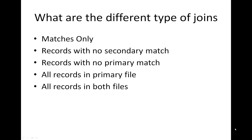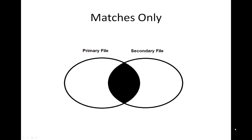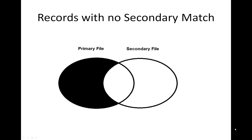I'll show you how the different matches fit together, and then we'll go to IDEA and do examples of each one. When performing a join in IDEA, we must have two files: the primary file and the secondary file. When we select the matches only option, we are selecting the intersection between the two — only records that exist in both the primary file and the secondary file. The records with no secondary match takes all transactions from the primary file that do not have a corresponding entry in the secondary file. So if the secondary file is the payments and the primary file is the vendors, this would be all vendors that no payments have been made to during the year.